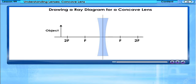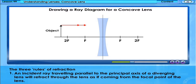Observe the animation carefully. You will see the three rules of refraction for a concave lens. Consider an object as shown. An incident ray travelling parallel to the principal axis of a diverging lens will refract through the lens as if coming from the focal point of the lens.